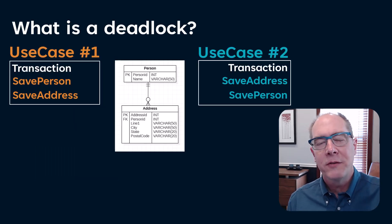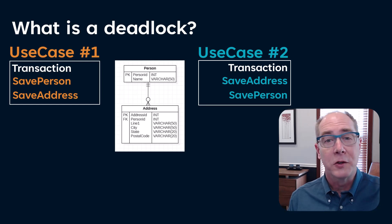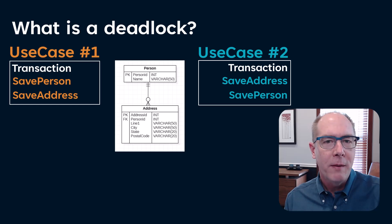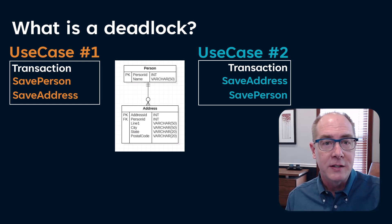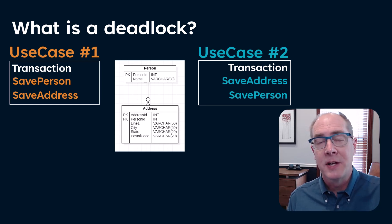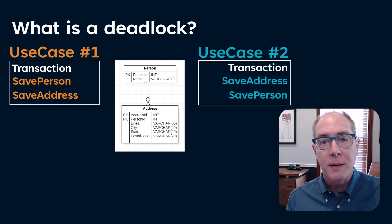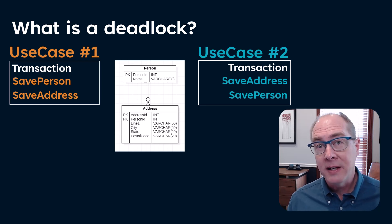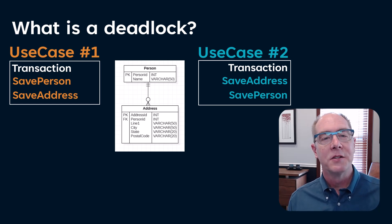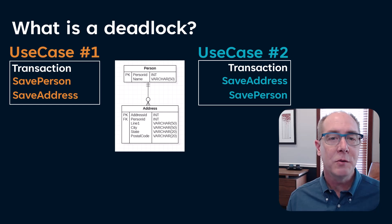We have two different use cases from two different controller endpoints or different processes — it doesn't matter. Both of them are creating a SQL transaction. SQL Server adheres to the ACID principles that guarantee data validity, meaning that when a row is updated, it's locked so we don't end up with inconsistent data. If another transaction comes along to update that row, it'll be blocked. Let's walk through what happens when these two use cases execute at the same time.